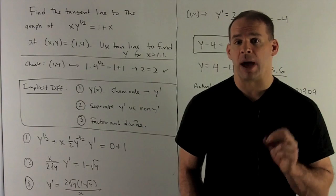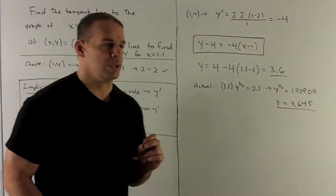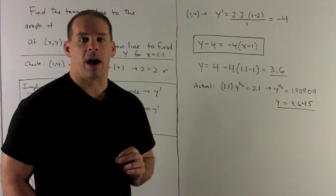We want a number for our slope. So now we have to put 1 and 4 in there and see what happens. When we do that, we're going to get -4.